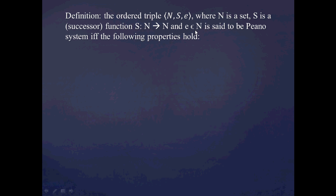And e is that zero element within N. We're going to say this is a Peano system if the following three properties hold. First, that e is not in the range of s — meaning there's no number in N that you could possibly plug in as input to the function s which would output e. So basically, that's abstracting the notion that 0 is not the successor of any number.